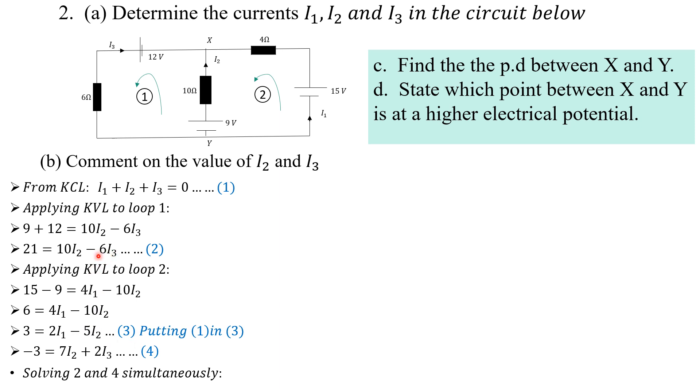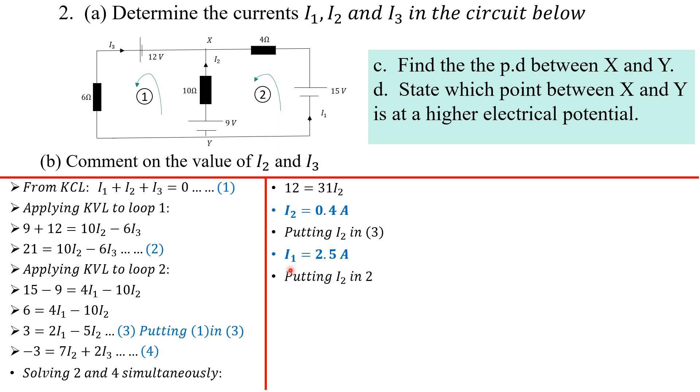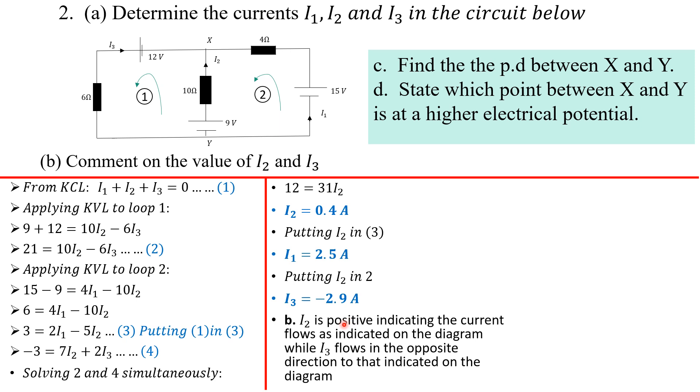Solving simultaneously, you notice that we have 12 equals 31I2, so I2 is 0.4 amperes. We can put I2 in equation three to get I1, which is 2.5 amperes. Put I2 in equation two, we get I3 as negative 2.9 amperes.